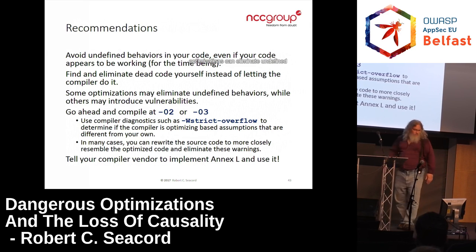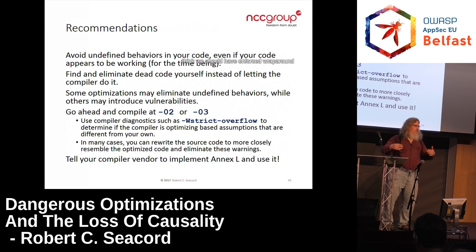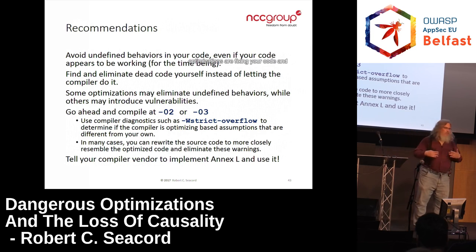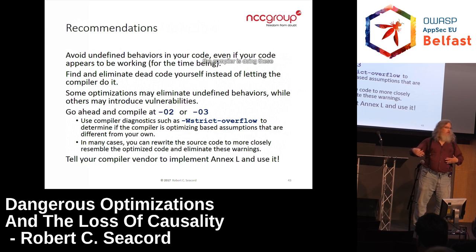We've seen that some optimizations can eliminate undefined behaviors while others introduce vulnerabilities. A lot of security people who learn a little about this think 'we should enforce wraparound behavior,' but that's not the recommendation I would give. The reason is you're turning off all optimizations, and many of those optimizations are fixing your code while some are breaking it. If you just turn them off, your code is going to get worse in quality and security and slower at the same time. My recommendation is to build optimized code, but turn on the warning flag to find out where the compiler is doing these optimizations for you. If it's optimizing on an assumption different than yours, your assumption is wrong and you need to revise your code.